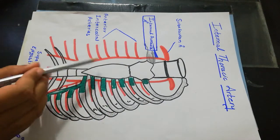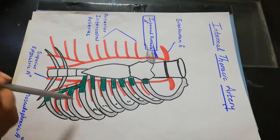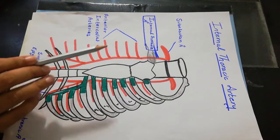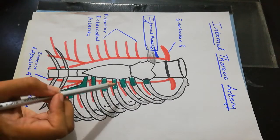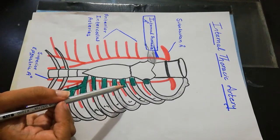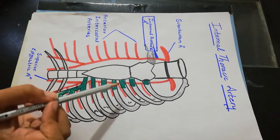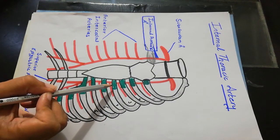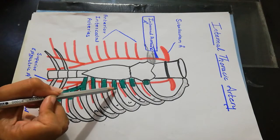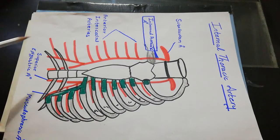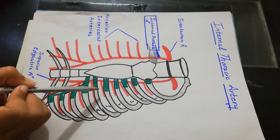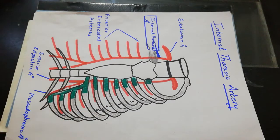In the lower part anteriorly, we have the pectoralis major muscle, the external intercostal membrane — which extends from the costochondral junction to the lateral border of the sternum — the internal intercostal muscles, and the intercostal nerves.